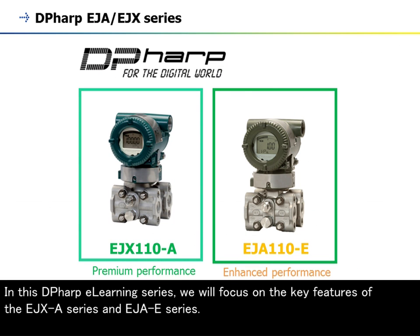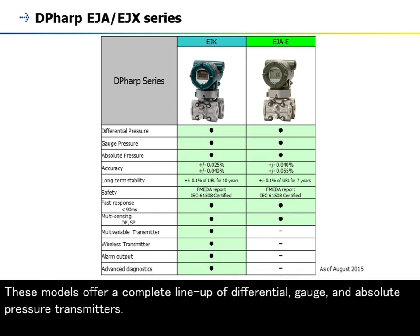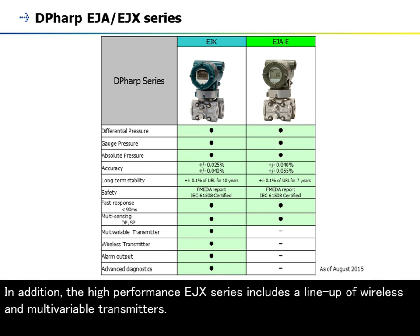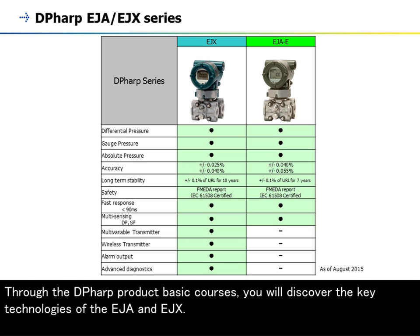In this DP-HARP e-learning series, we will focus on the key features of the EJX-A series and EJA-E series. These models offer a complete lineup of differential, gauge, and absolute pressure transmitters. In addition, the high-performance EJX series includes a lineup of wireless and multivariable transmitters. Through the DP-HARP product basic courses, you will discover the key technologies of the EJA and EJX.